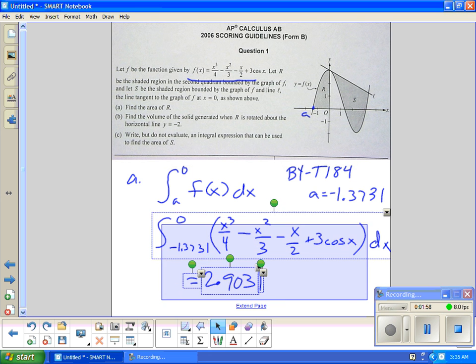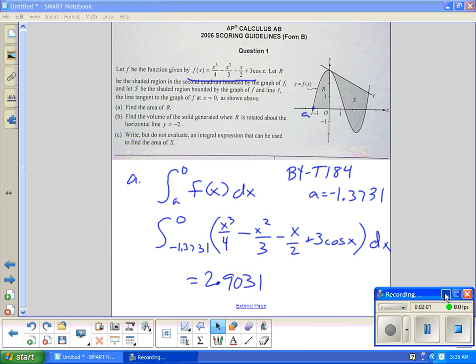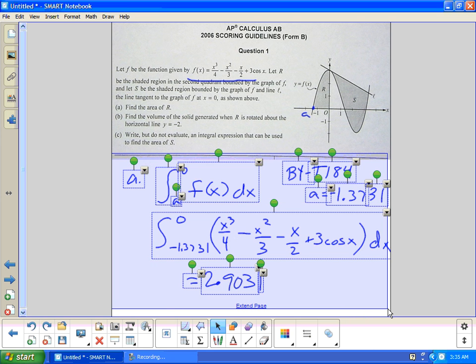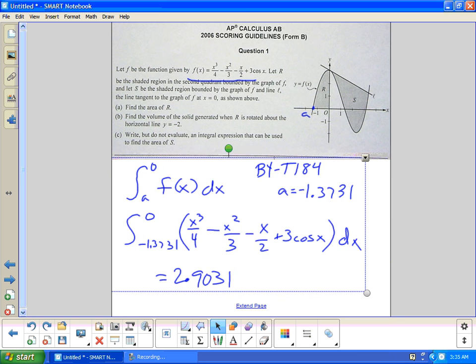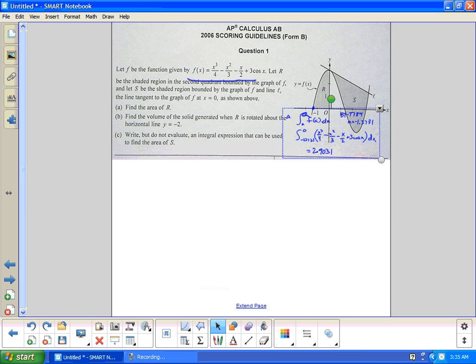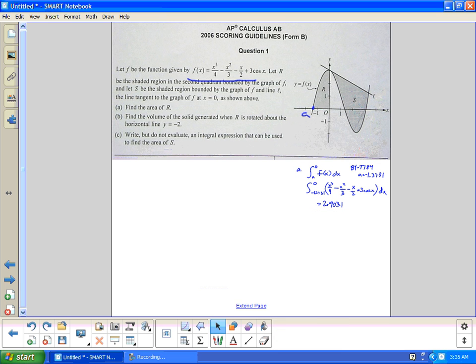We'll save that and we'll score it here in a second. I'll group all of this, check it down, put it right here for letter A. So for letter B, find the volume of a solid generated when R is rotated about the horizontal line y equals negative 2.